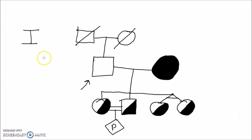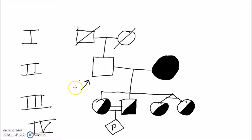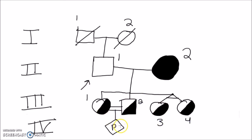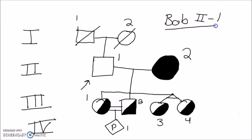Now that we've finished drawing Bob's family tree, we mark the levels of each generation. Bob's parents are Generation I in Roman numerals, Bob's generation is Roman numeral II, his children are Roman numeral III, and his grandchild is Roman numeral IV. Within each generation, you mark each person going from left to right in order. For example, Bob would be identified as II-1, and that's how you identify individuals on the pedigree.